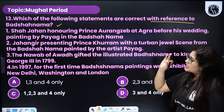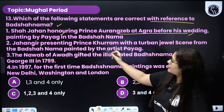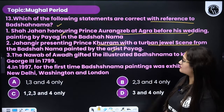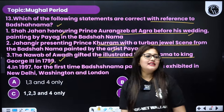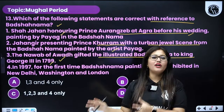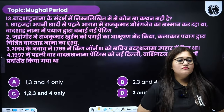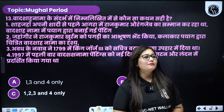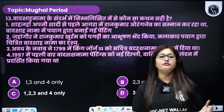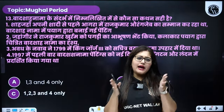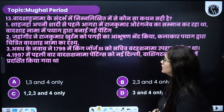With reference to Padshahnama paintings: Shah Jahan honoring Prince Aurangzeb at Agra before his wedding was painted by Payag. Jahangir presenting Prince Khurram with a turban jewel is also in Padshahnama, painted by artist Payag. The Nawab of Awadh gave the Padshahnama to King George III in 1799. In 1977, the first exhibition of Padshahnama paintings was held in New Delhi, Washington, and London. All four statements are correct.